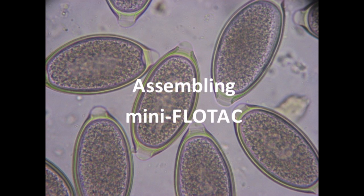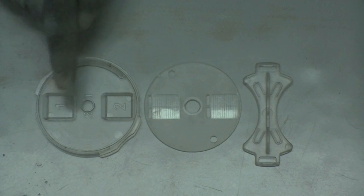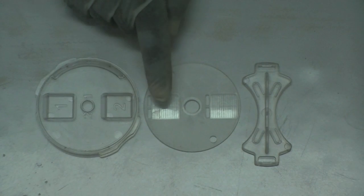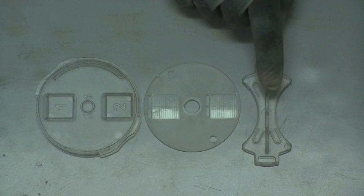Assembling the mini FLOTAC. The mini FLOTAC apparatus first needs to be put together. It consists of three parts: the base with two numbered flotation chambers, the reading disc with two grids, and the key.